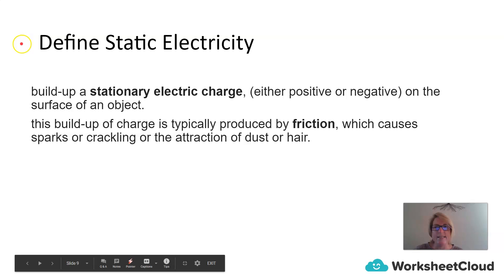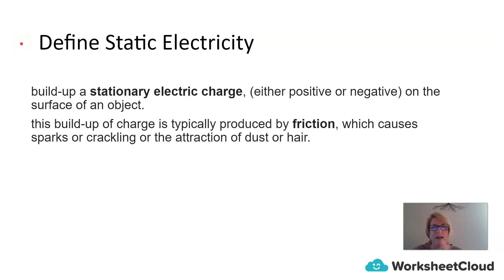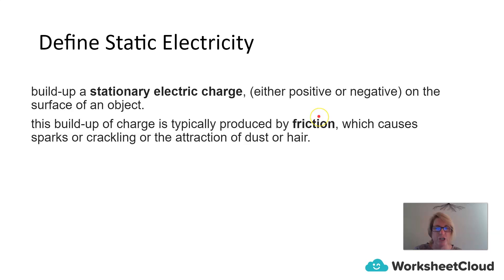For today's lesson, we need to focus specifically on defining static electricity. Static electricity is a build-up of a stationary electric charge. This charge can either be positive or negative, and the build-up of this charge is on the surface of an object. This build-up of charge is typically produced by friction, and that causes the sparks, the crackling, the attraction of dust, or the attraction of hair.